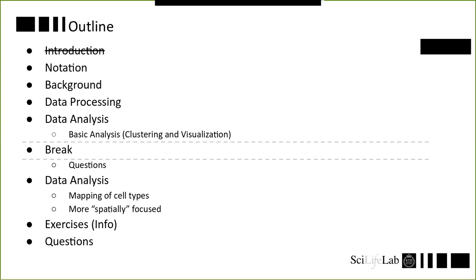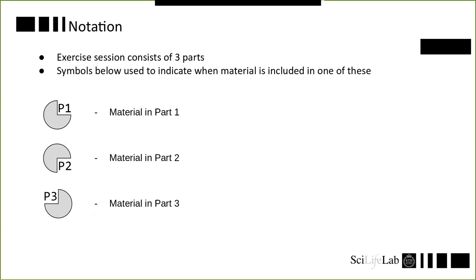So just some information about the outline of this session. I'm going to quickly go through some brief notation, then look into background of spatial techniques. My idea is that spatial is a pretty new field, so maybe it's good to add some context to what data we'll be working with. Then we briefly touch on data processing, move to data analysis. We'll do some basic analysis comparing to single cell data, have a short break, continue with data analysis looking at mapping of cell types, then do another example looking at more spatially focused analysis which you can't really do with single cell data.